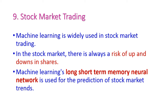The next application is stock market trading, which is very risky because the rate of products increases and decreases very often. Machine learning algorithms are very useful to predict the stock market, and here a long short-term memory (LSTM) neural network is used to predict the rate of stock market trades.